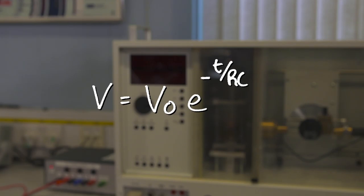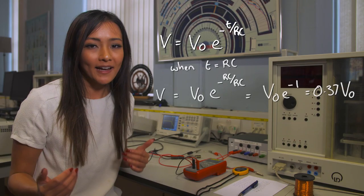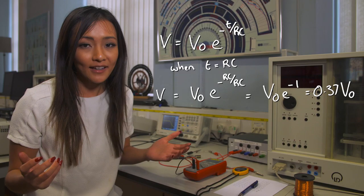Since we've previously already calculated the time constant, we would expect after a time, T equals RC, that the voltage will drop 37% of its initial value. And we see that this is the case.